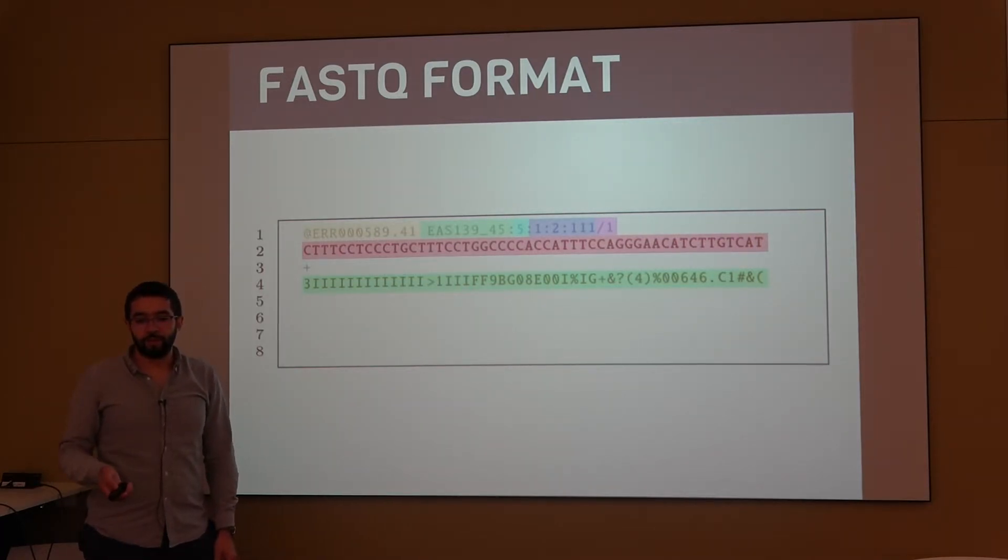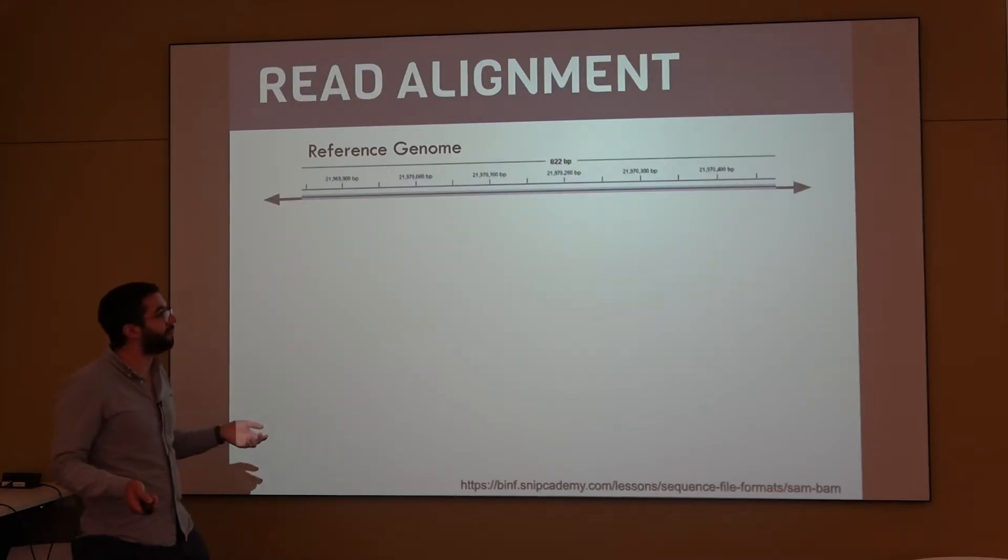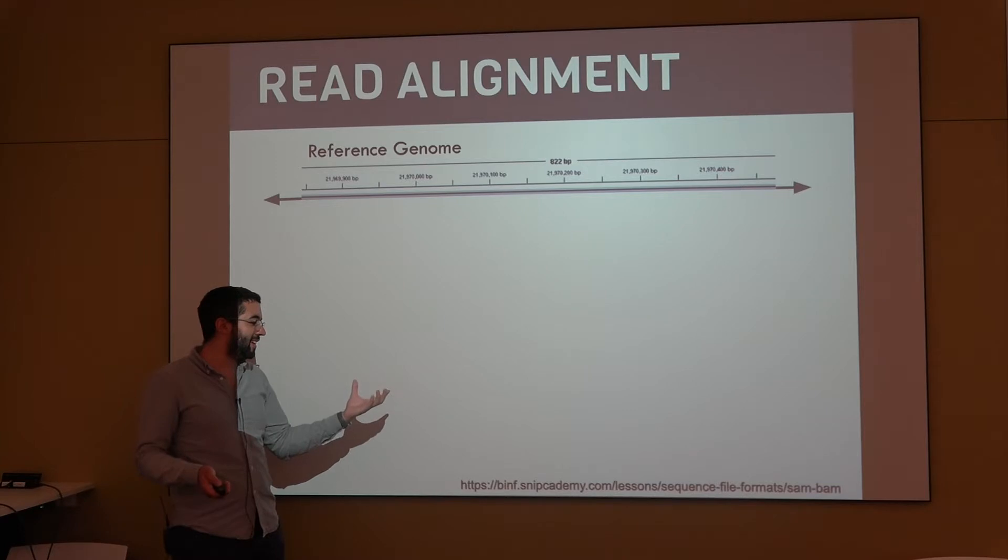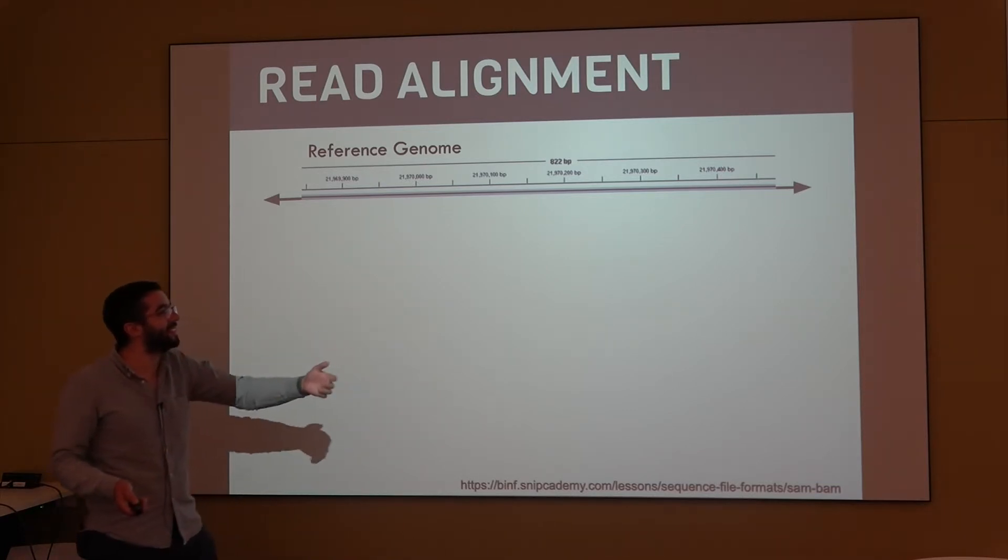So, the FASTQ format has all of these fields, has all of this information, and what is going to happen afterwards is that each one of these short reads has to find, we have to find the place in the original genome, in the original genetic sequence where that fragment came from.